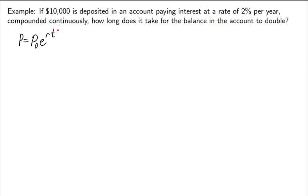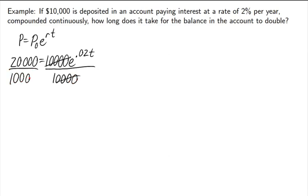Now, we're wanting to know how long it takes for the balance to double. So, that means that we're going to plug in double as our future value, and so that is going to be $20,000. The P0 will be $10,000. And the interest rate is .02. And we don't know the time. That's what we're solving for. So, let's solve this equation. We'll start out by dividing by 10,000, and so we get 2 equals e to the .02t.